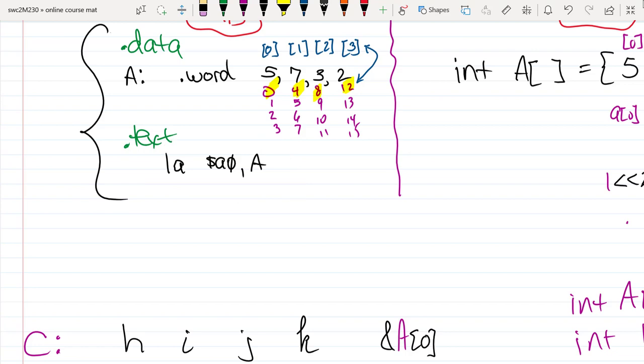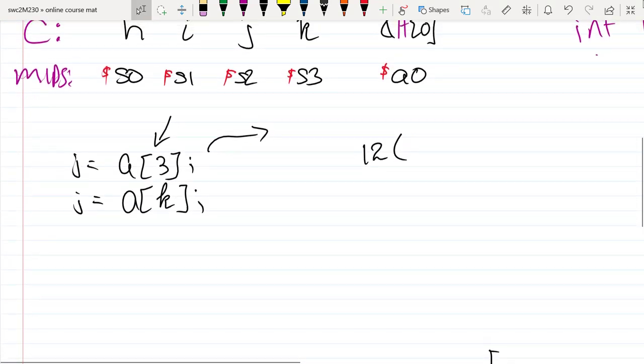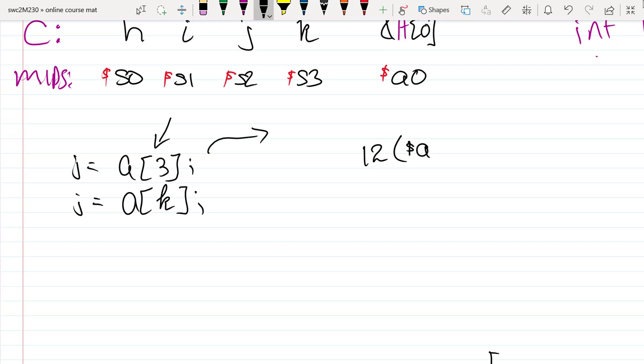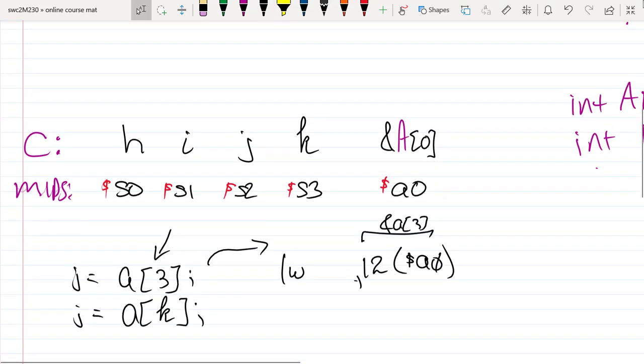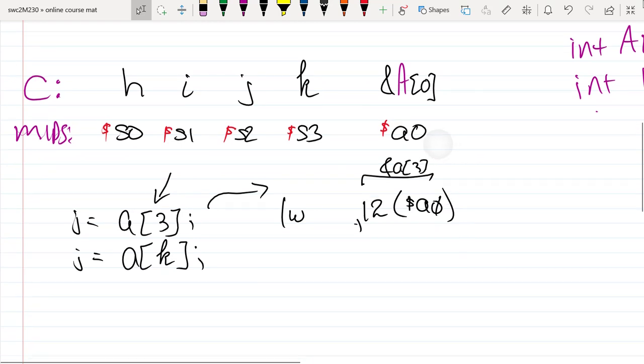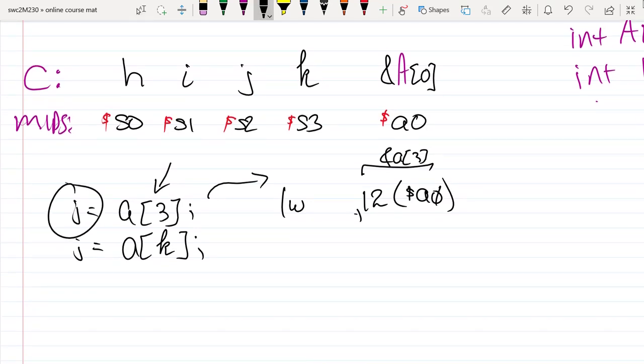So the address of the array is here and then if I go 12 bytes over that will give me the address of a sub 3. Then what I'll do is, knowing that I have the address, I can use a load word which will access the value of that address and I'm going to store it inside of j, and j is s2.